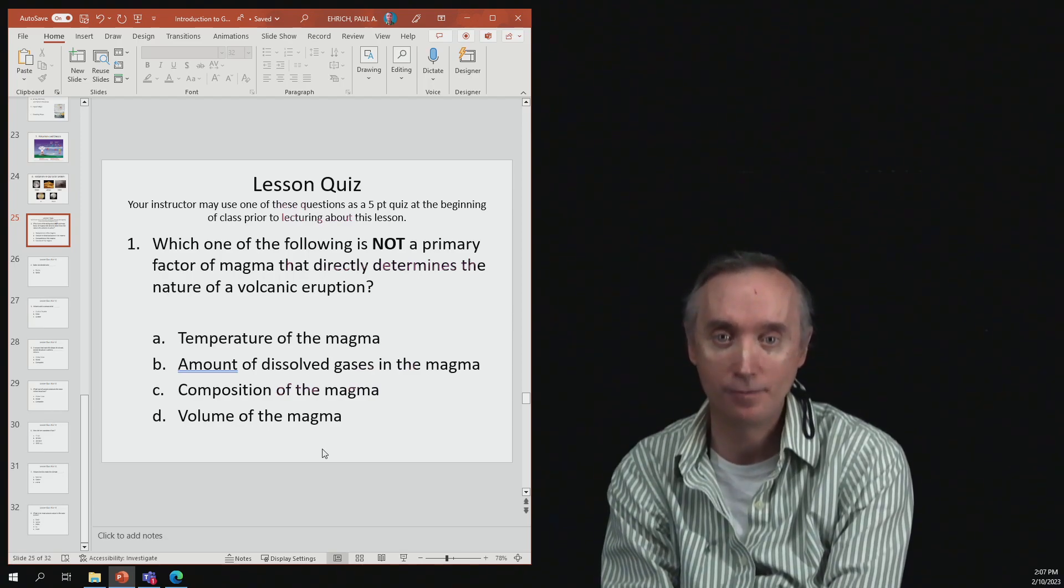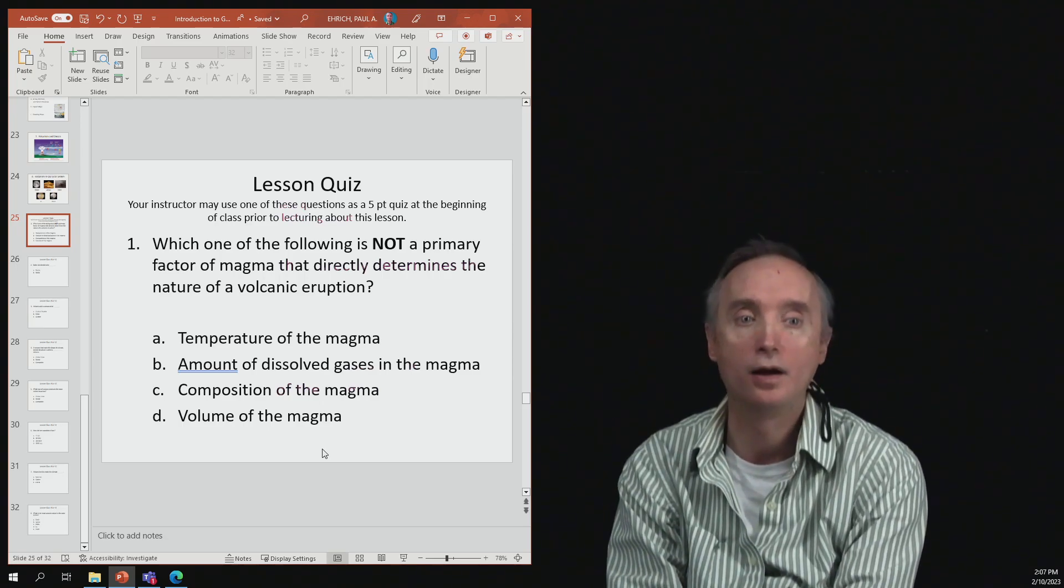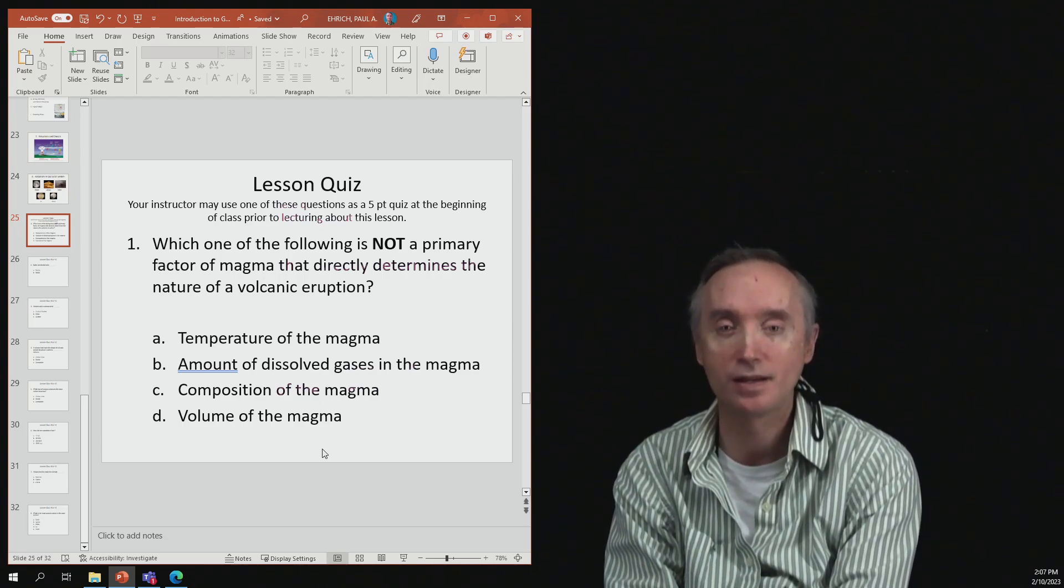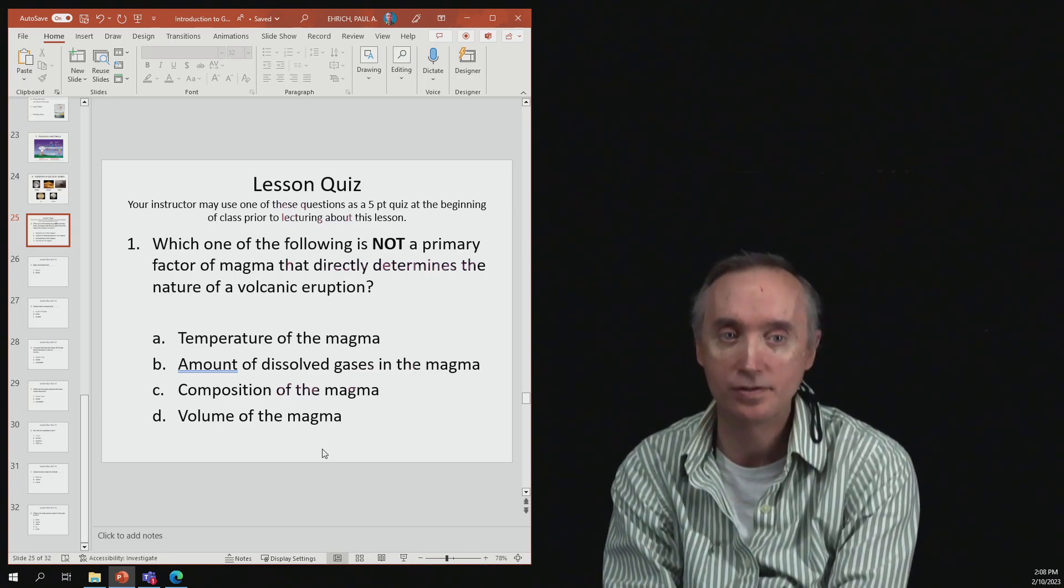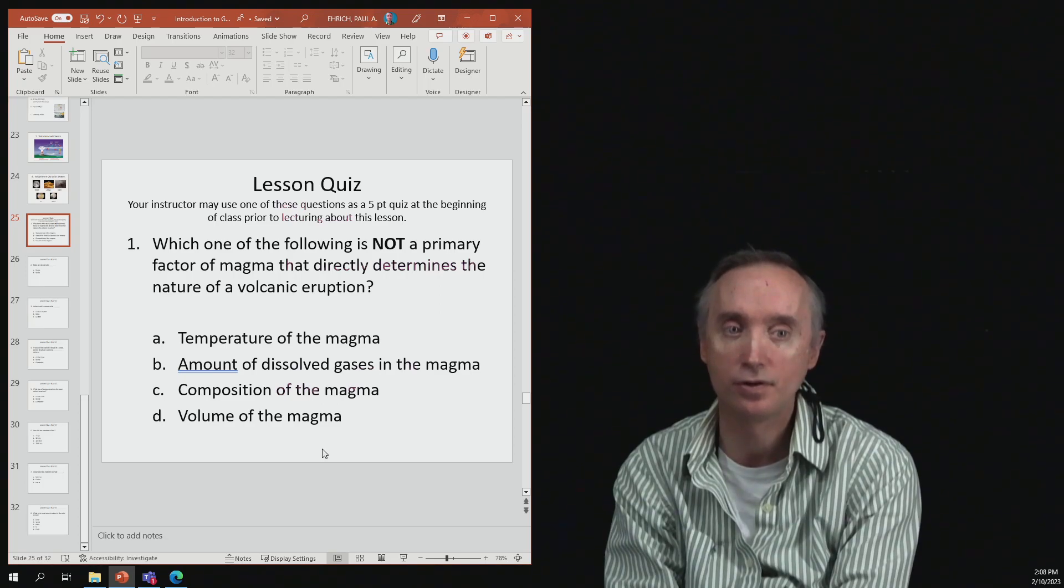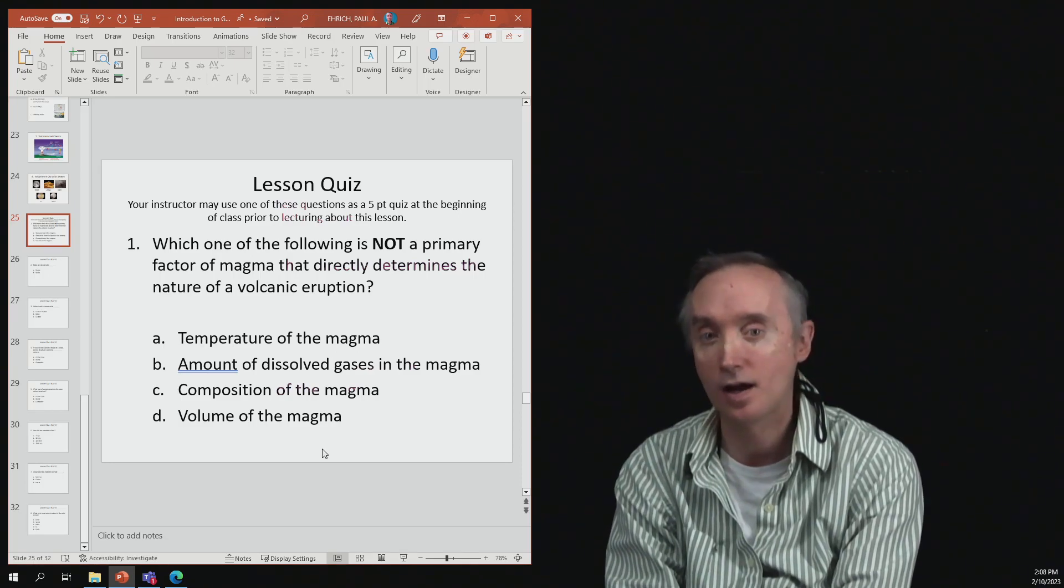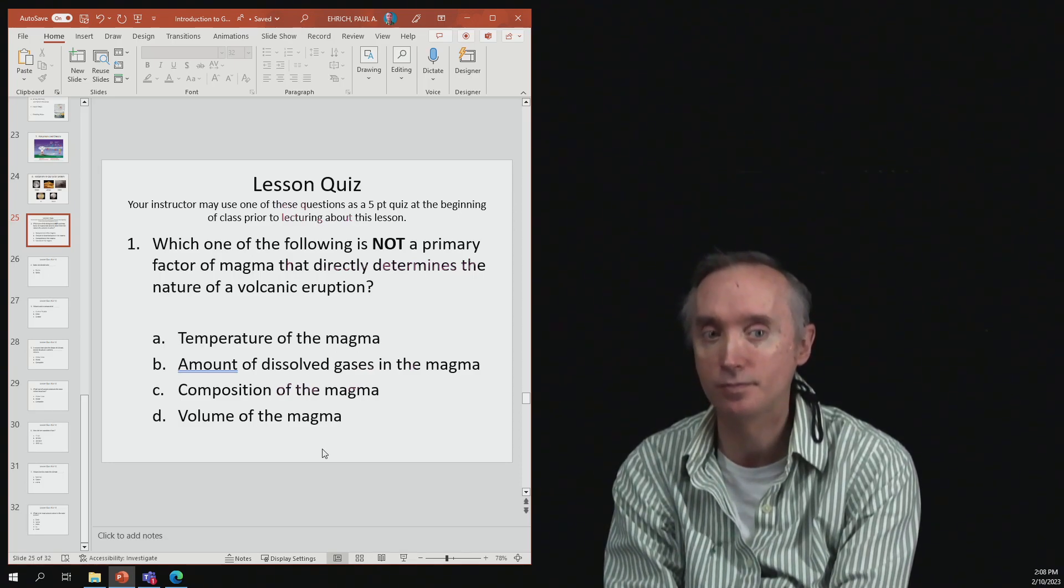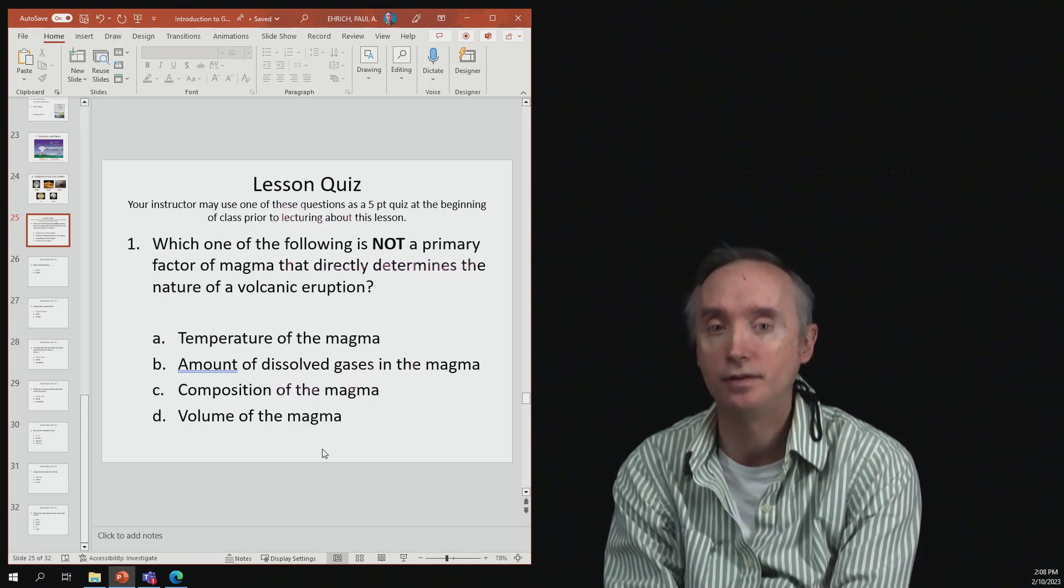We mentioned that temperature does affect the magma - it makes it either runnier or stickier. The second one is amount of dissolved gases, which also can affect the stickiness. The composition of the magma - yes, because the amount of silica in it can affect the viscosity.